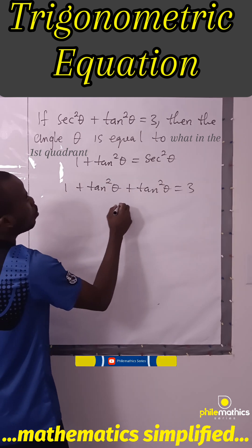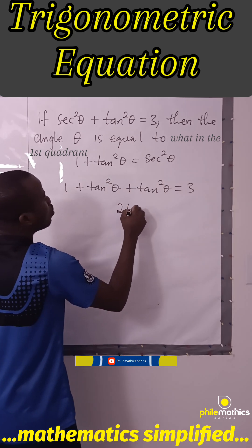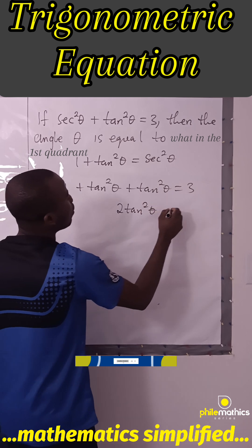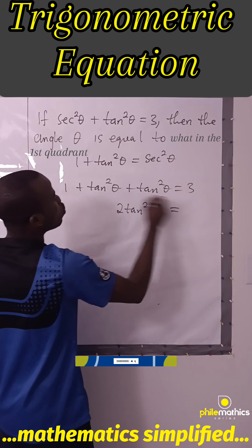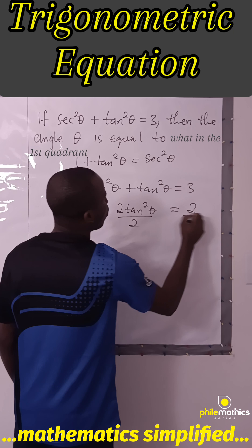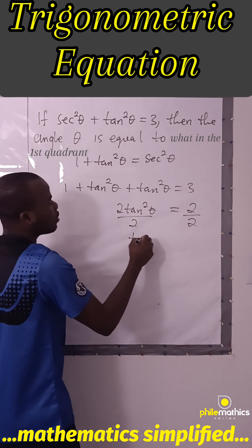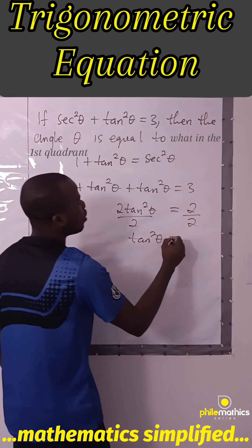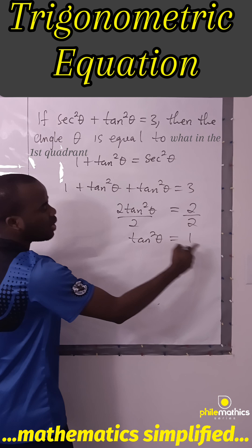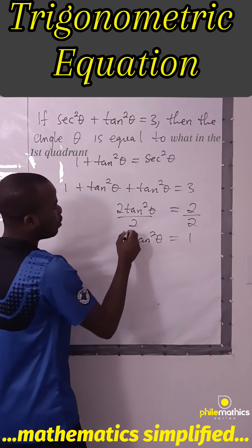Adding, we'll have 2tan²θ because 3 - 1 = 2. We'll divide both sides by 2 to get tan²θ = 1. Taking the square root of both sides, we have tanθ = 1.